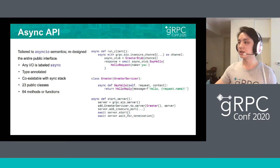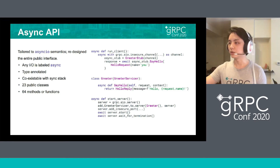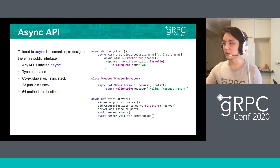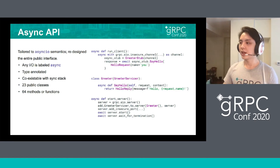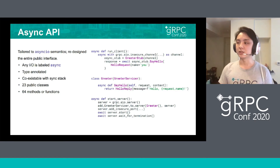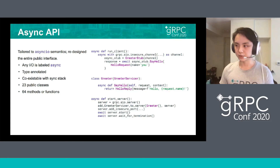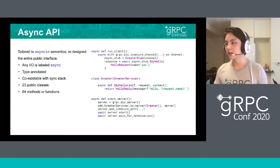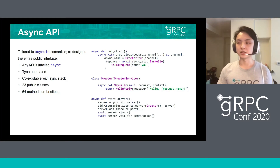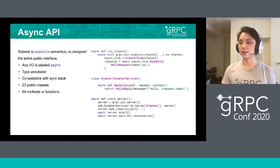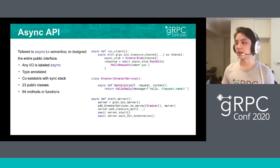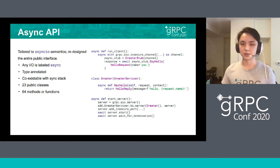As you can see, we can use async/await to create a channel and use await to wait for an RPC to finish. On the lower part, you can define an asynchronous method handler through async def. And finally, you can start a server in an asynchronous way.